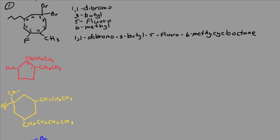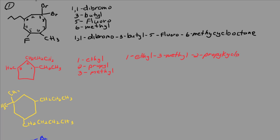And we'll go around like this. We have a 1-ethyl, a 2-propyl, and a 3-methyl. Again, we have to name the substituents in alphabetical order. So we have a 1-ethyl, a 3-methyl, and a 2-propyl-cyclopentane.